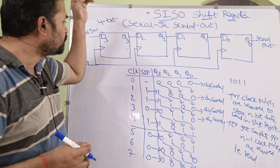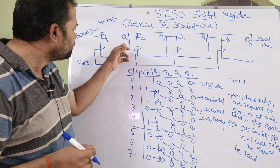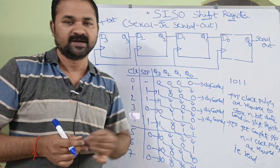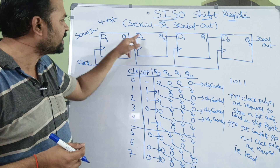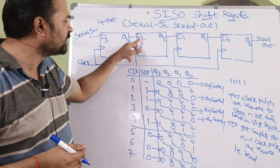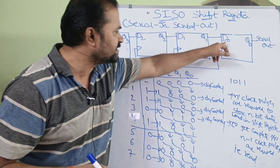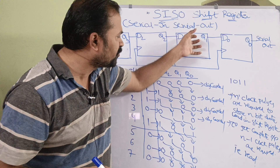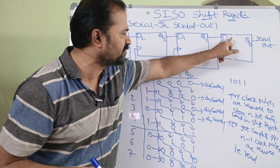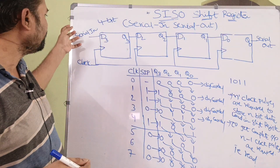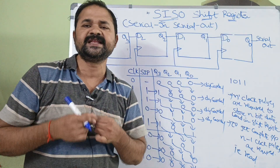Here the output of one flip-flop is connected as input to the next flip-flop. The output of the first flip-flop is Q3, and Q3 will be connected as input to the next flip-flop, that is D2. So D2 input comes from Q3. Likewise, the output Q1 will be connected as input to the next flip-flop. The first flip-flop accepts serial input, whereas the last flip-flop produces serial output.